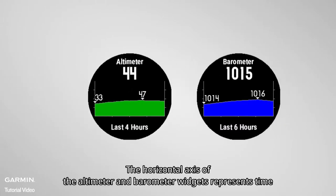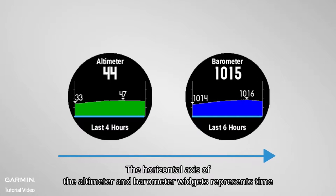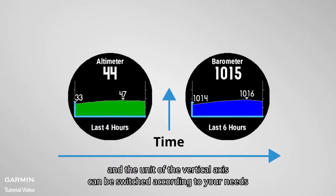The horizontal axis of the altimeter and barometer's widgets represents time, and the unit of the vertical axis can be switched according to your needs.